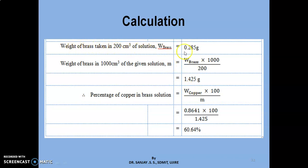Weight of brass taken is 0.25 gram. Weight of brass in a liter of solution can be weight of brass times 1000 over 200. Finally, the percentage of brass solution can be calculated by taking weight of copper times 100 over the weight of brass taken. That gives 60.64%. Thank you.